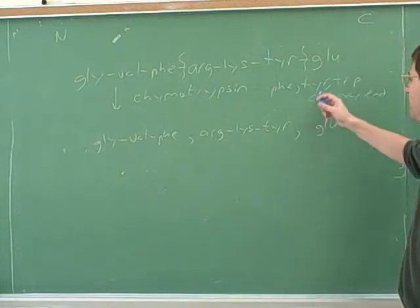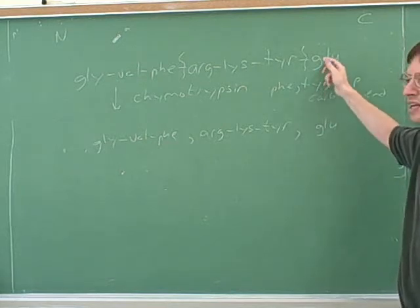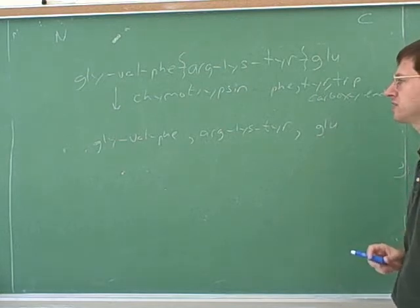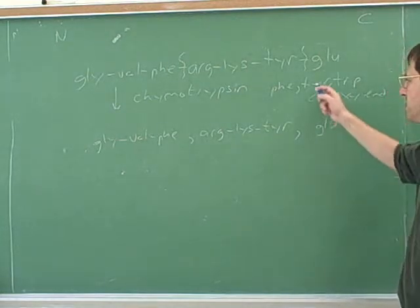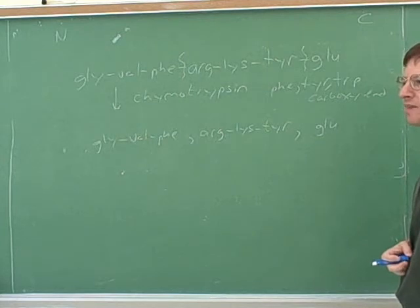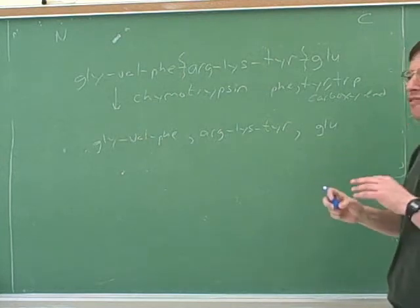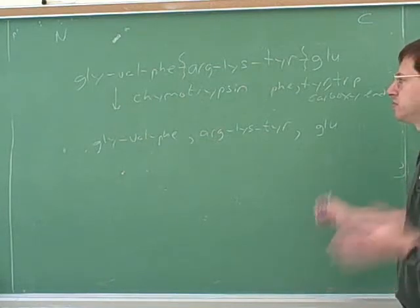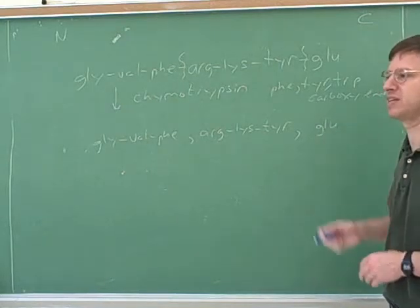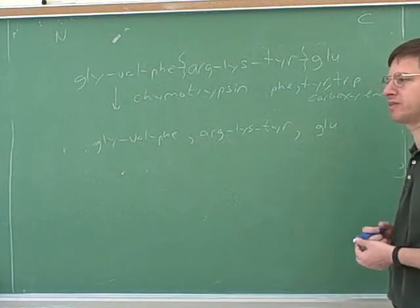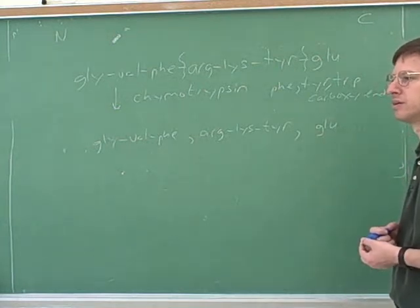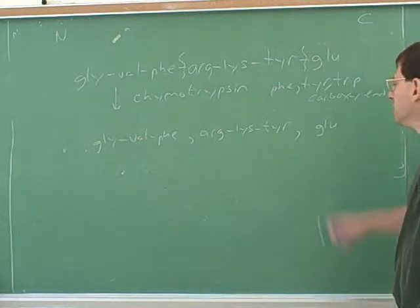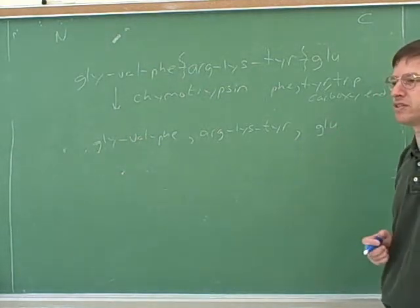Notice that the last fragment does not have phenylalanine, tyrosine, or tryptophan, but it gets cleaved anyway just because it's at the end. How many cleavages did chymotrypsin make? Two. And how many fragments did that produce? Three. So that's important arithmetic: however many cleavages you do, you have one more fragment than that. Two cleavages makes three fragments; three cleavages makes four fragments.